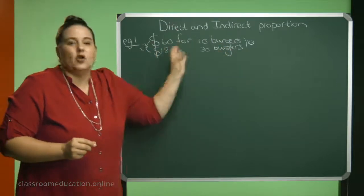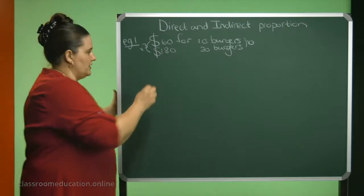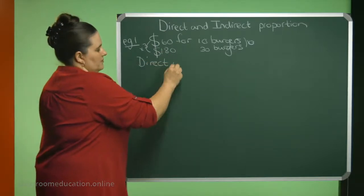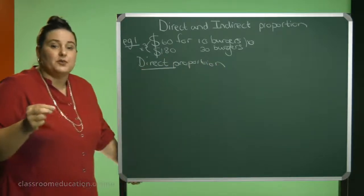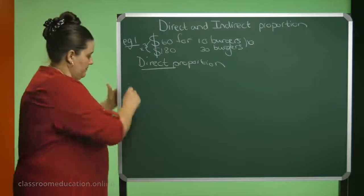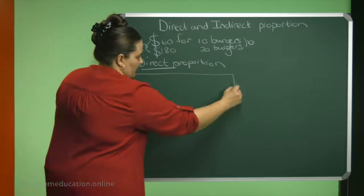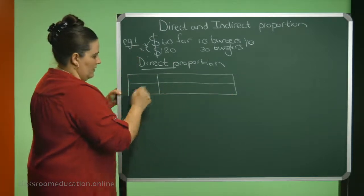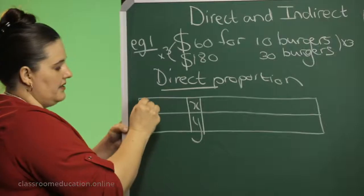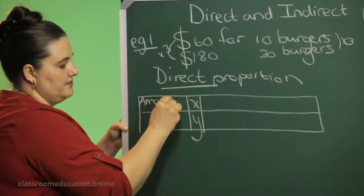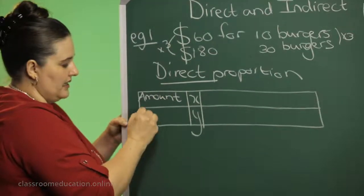And this we call direct proportion. You can also represent this information in a table form. Let me show you. We are going to make this the X and the Y, and here we say the amount of burgers, and here we can say the price.